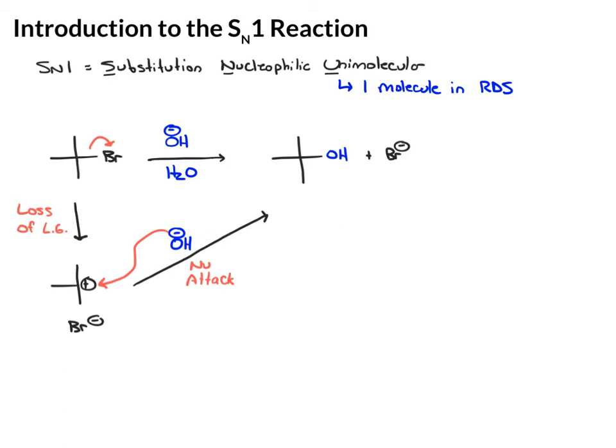And it's this first step where we lose the leaving group that's the slow step. That's the hard thing to do because you're losing something to form an unstable intermediate. So that's our rate determining step.